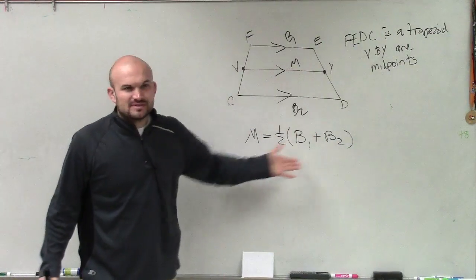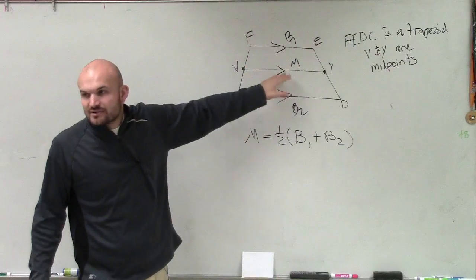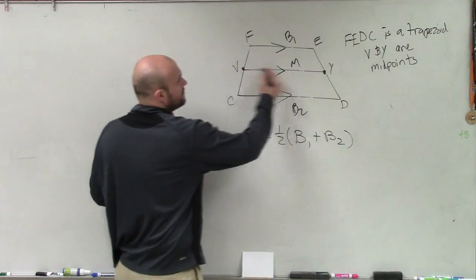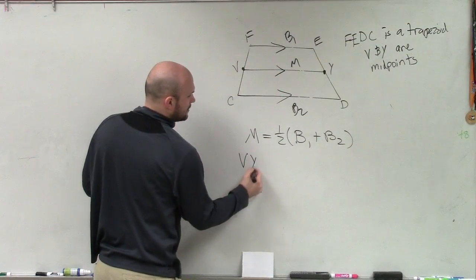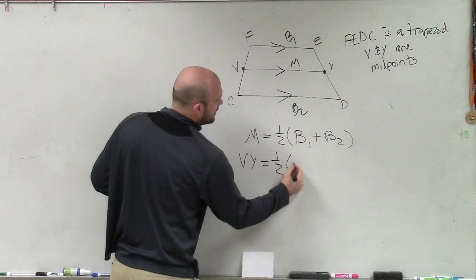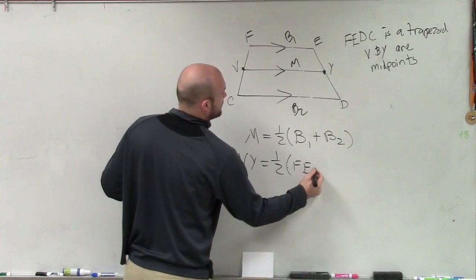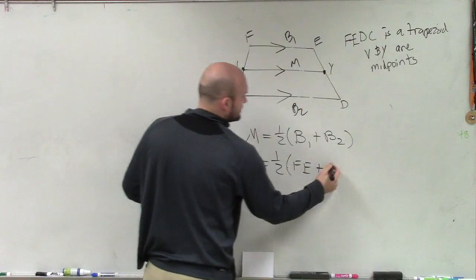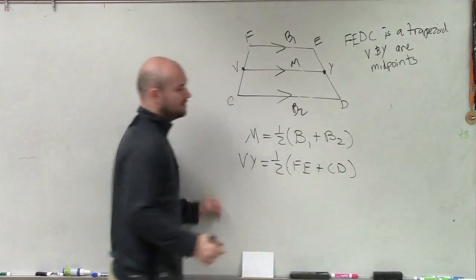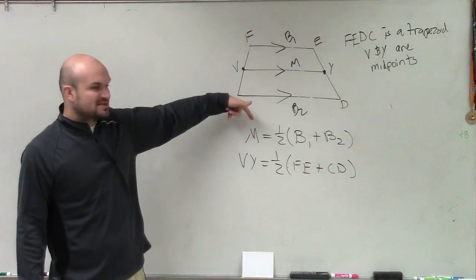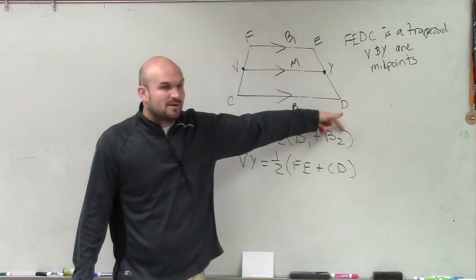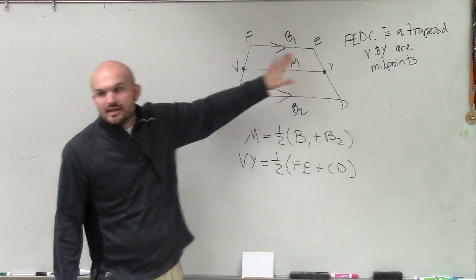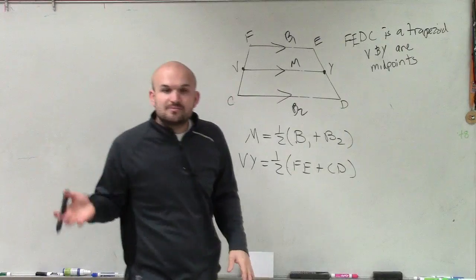Well, I don't want to use M's and B's. Because how does it relate to this problem? VY is congruent to 1 half FE plus CD, right? Where M represents midsegment, B represents base one, base two. But I'm actually labeling them how they are in this problem. So now it's important.